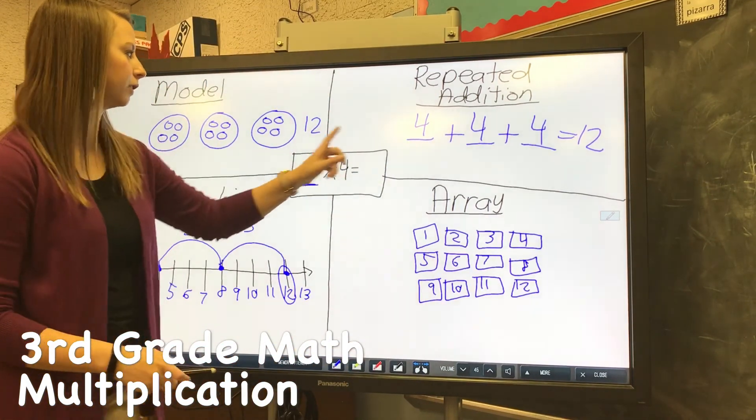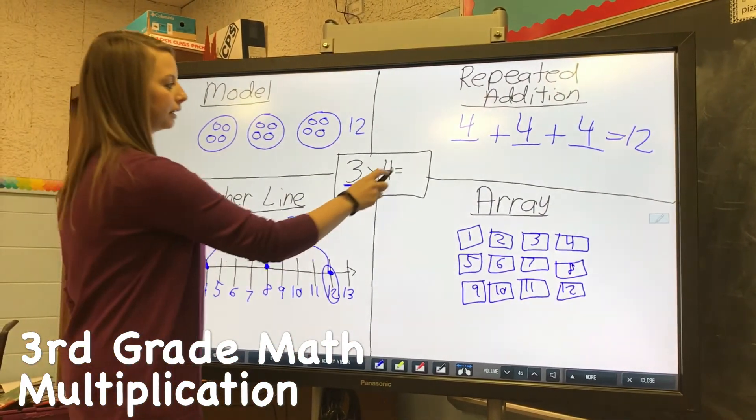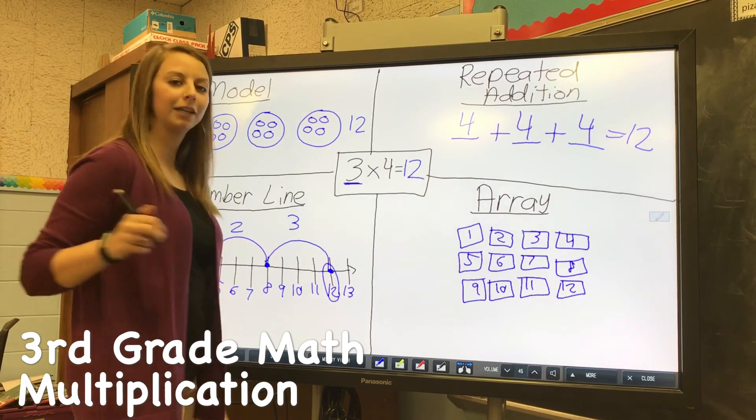So then we know by all four of the strategies that the answer to 3×4 is 12.